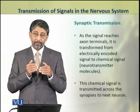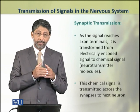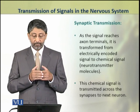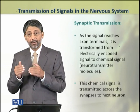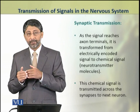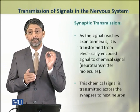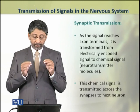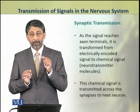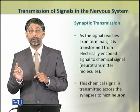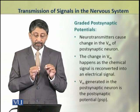When the signal reaches the axon terminals, it is transformed from electrically encoded signals into chemical signals in the form of neurotransmitter molecules. This chemical signal is then transmitted across the synapse to the next neuron.